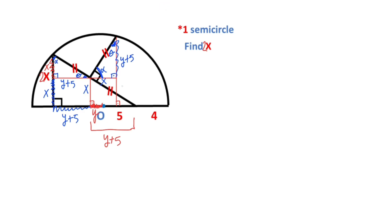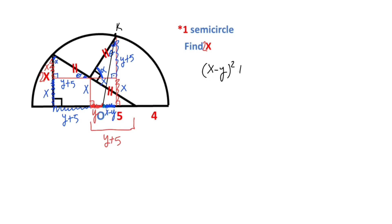And then this length must be equal x. Next, if we connect these two corners, let's call this k. Notice that if this is x and here is y, that means here must be equal x minus y. And then for this triangle, if we apply the Pythagorean theorem: (x minus y) squared plus (x plus y plus 5) squared must equal the square of the radius.